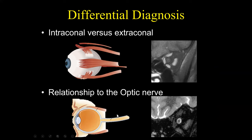Now in 2022, what I think we should be doing is defining the differential diagnosis for orbital masses based on the relationship to the optic nerve. On MR you should always be able to see your muscles, but also the optic nerve surrounded by CSF and then the dural sheath. For me, intraconal versus extraconal is a very high-level view. If you understand the anatomy, you can make a differential diagnosis based on the different anatomic structures visible within the orbit.